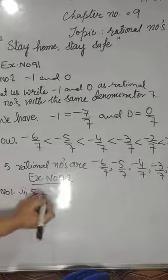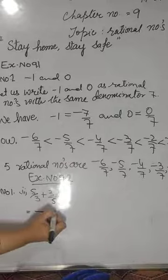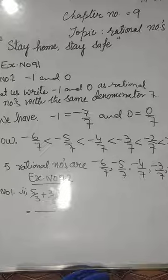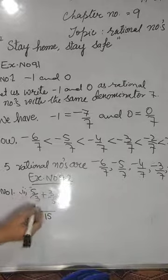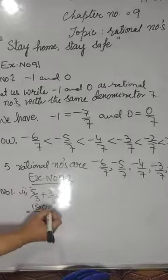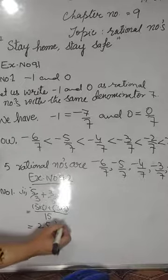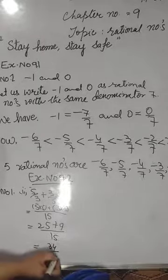3 by 5 plus 5 by 3. Karne se pehle aapko dekhna hai ke kya inke denominators prime numbers hain ya composite numbers. Agar prime numbers hain, seedhe multiply karna hai aur phir cross multiplication karna hai. Agar composite numbers hain, toh unka LCM karna hota hai. Yeh dono prime numbers hain, toh seedhe karenge multiply: denominator banta hai 15. Cross multiplication: 5 into 5 plus 3 into 3 — wo ban gaye 25 plus 9 by 15. Answer nikla 34 by 15.